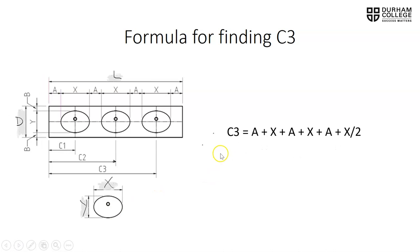For C3, we're going to add A, plus X, plus A, plus X, plus another A, and then half of X. So on the diagram from left to right: A, X, A, X, A, and then X/2. So: C3 = A + X + A + X + A + X/2, or 3A + 2X + X/2. Note that there is more than one way to find C1, C2, and C3 — this is just one of the options.